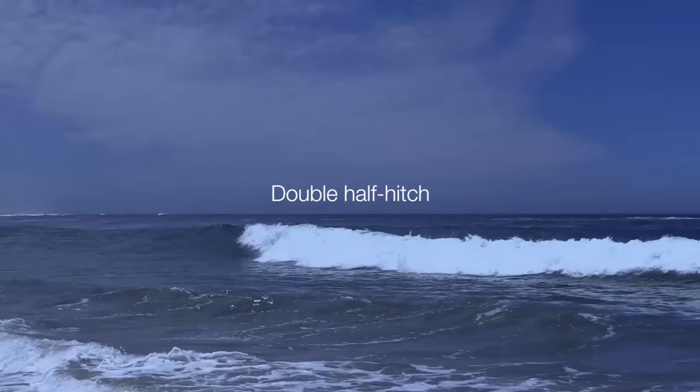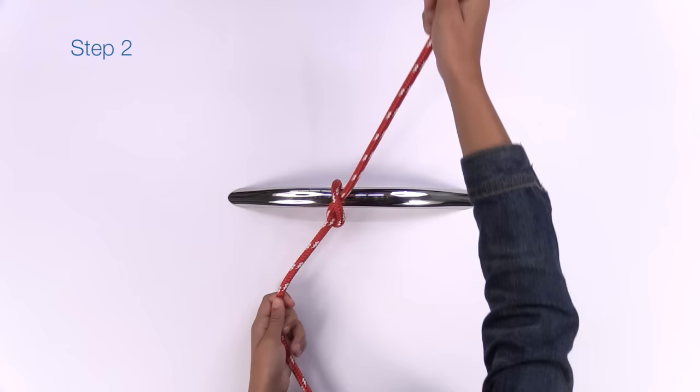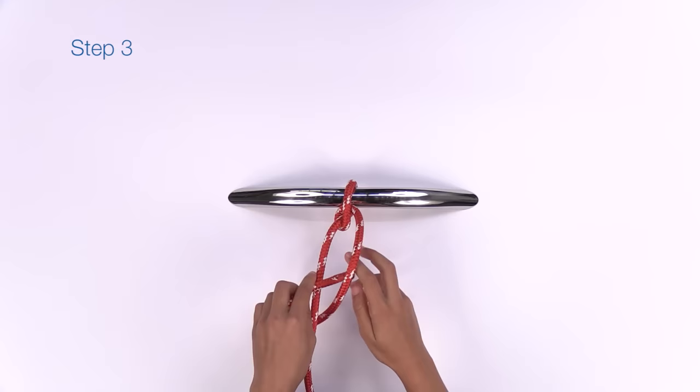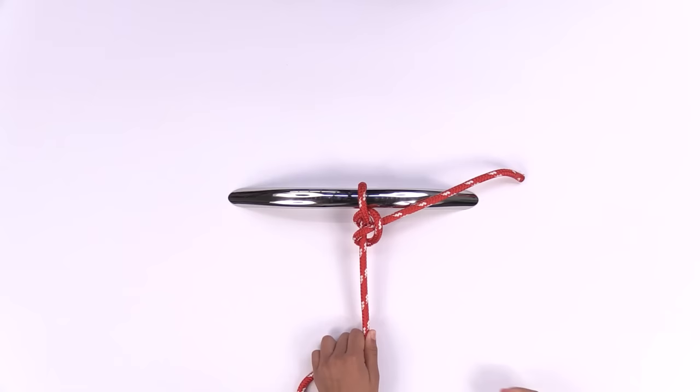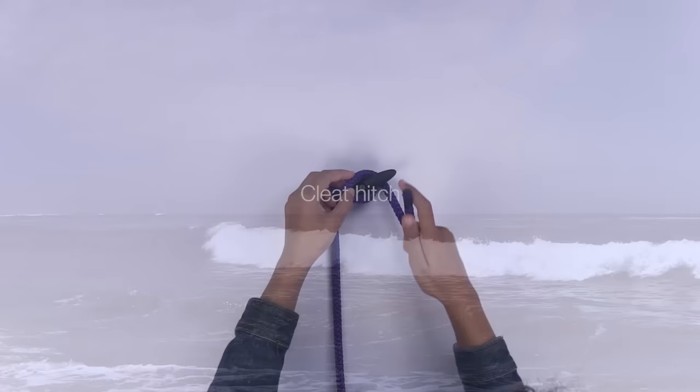For a double half hitch, simply repeat the last step of the half hitch, being careful to wrap the rope around the same side that you did before, like this. Now just like before, pass it through the loop like this and snug it up. Congratulations! You have just changed your half hitch into a double half hitch.